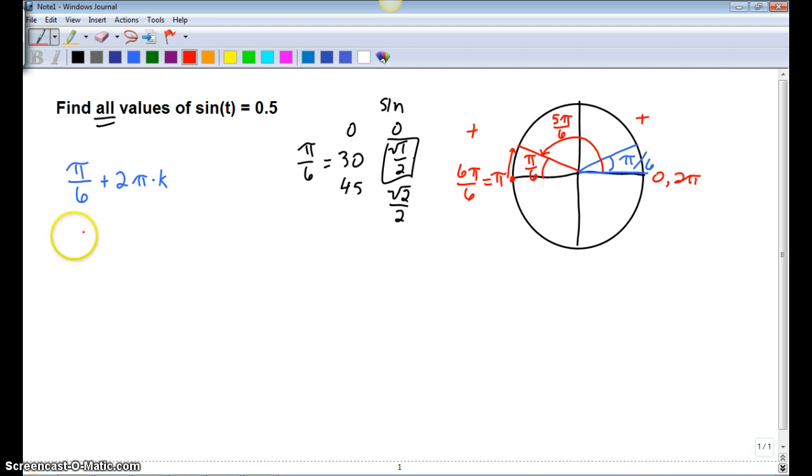In other words, you can try this. Try five pi over six in your calculator, you will get 0.5 as your answer.